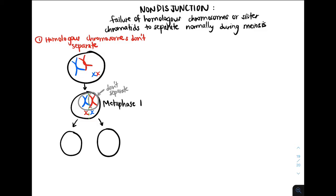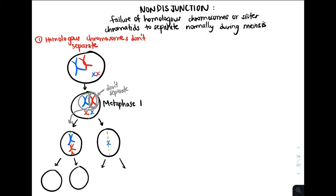In that case, we might expect the big red chromosome to go to the cell on the left, when it would have been in the cell on the right. The resulting cells would look like this, and they would line up along the metaphase plate during metaphase II. As a result, we would expect the gametes to have the incorrect number of chromosomes.